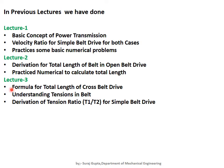In lecture three, we derived the formula for total length of the cross belt drive, similar in approach to the open belt drive formula. We also understood the tension in the belt and derived the relation of tension ratio with the coefficient of friction and angle of contact in simple belt drive.